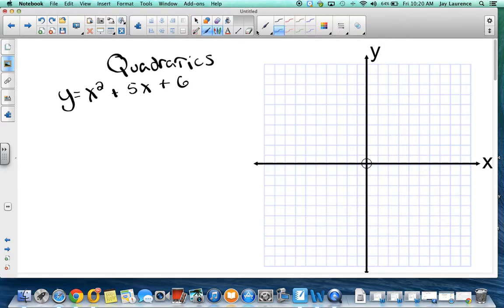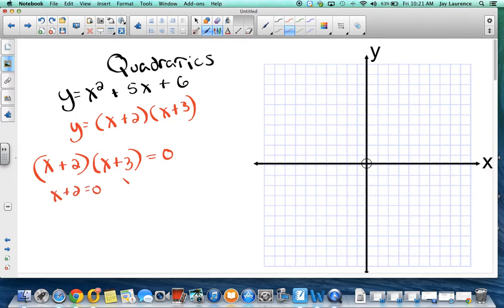Now, remember with quadratics, we can factor sometimes. And if you can factor it, it's done a lot more simply. I notice this is a trinomial, and I know that the factors of 6 that add up to 5 are 2 and 3. So this is going to factor as y equals the quantity of x plus 2 times the quantity of x plus 3. Now, I can set it equal to 0, and now I'm going to solve each part. x plus 2 equals 0, and x plus 3 equals 0.